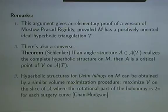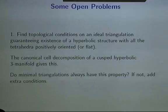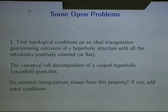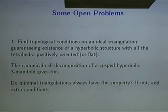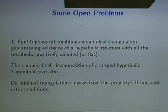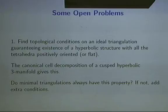So to finish up in the last ten minutes or so, I just wanted to mention a few more open problems. The first problem we've been looking at today is: we'd like to find topological conditions on an ideal triangulation that guarantee it's actually a geometric triangulation for some hyperbolic metric — starting from topological or combinatorial conditions, can we guarantee the existence of a hyperbolic structure with all tetrahedra positively oriented? It would also be good for computational purposes to allow for flat tetrahedra. This is a really interesting topological question.